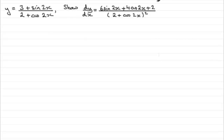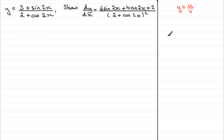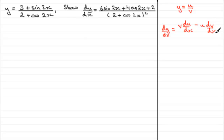The quotient rule is in your formula book. It states that if y equals u over v, where u and v are functions of x, then dy/dx equals v times du/dx minus u times dv/dx, all over v squared.